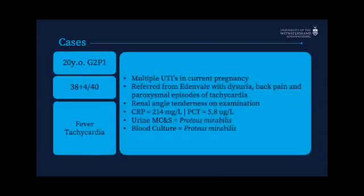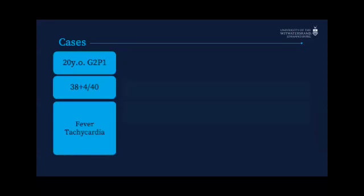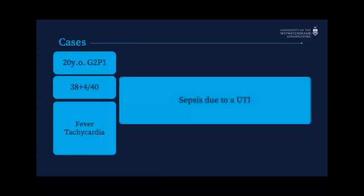Case three had multiple UTIs in the current pregnancy. She came from Edenvale with dysuria, back pain, and paroxysmal episodes of tachycardia, plus renal angle tenderness on examination. Inflammatory markers were elevated, and she had Proteus mirabilis on both blood and urine cultures. She was a case of sepsis due to a UTI. She had runs of tachycardia up to about 180 beats per minute, which all settled with appropriate antibiotics and getting the sepsis under control.